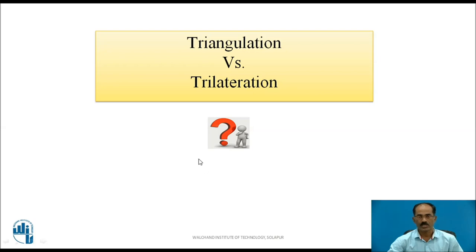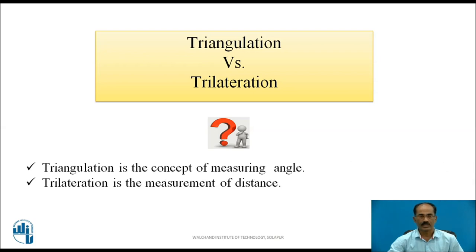Here we use the concept called trilateration. Let us clarify the difference between the words triangulation and trilateration. Triangulation is the concept of measuring angles, whereas trilateration is the measurement of distance.